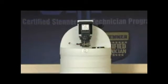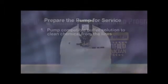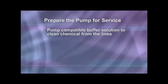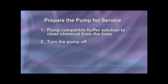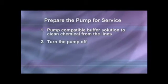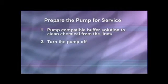Preparing the metering pump for service can vary by application, but in general will consist of the following steps. Pump a compatible buffer solution through the pump for several minutes to clean the chemical from the lines. Turn the motor on-off switch to the off position, which is down or to the rear of the pump.